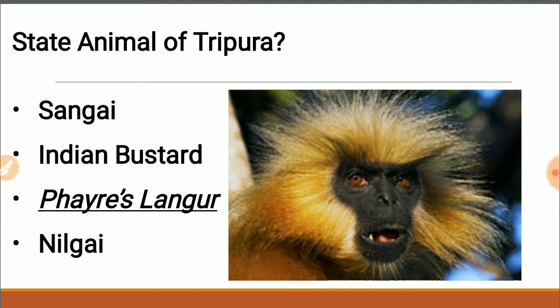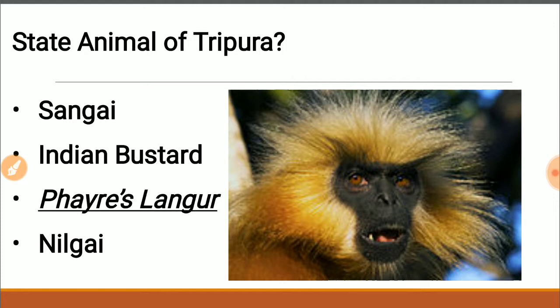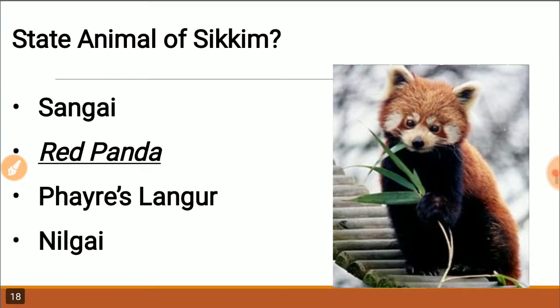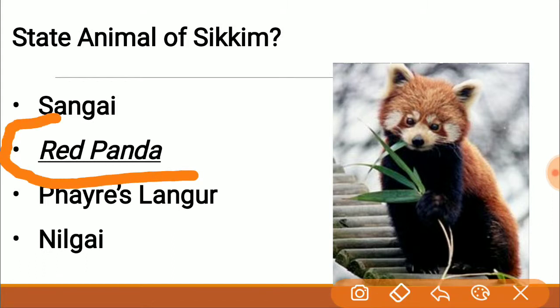The state animal of Tripura is the Phayre's Langur — a form of primate or ape. The capital of Tripura is Agartala. The state animal of Sikkim is the Red Panda — a very cute, arboreal animal that feeds mainly on bamboo. It is quite vulnerable and listed as endangered; it is very shy and tries to hide in the trees.